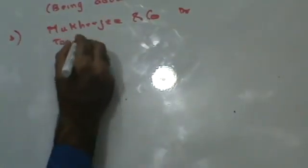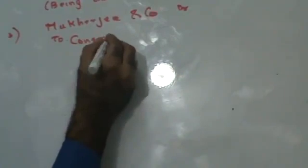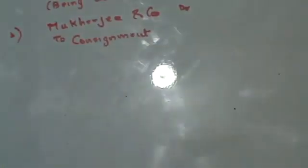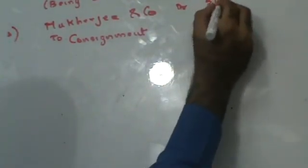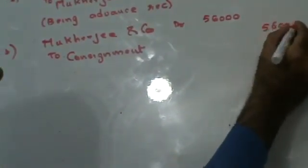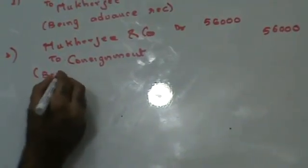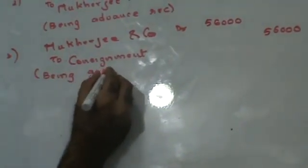Mukherjee and Company sent an account sales which states that the total goods were sold for 56,000. Goods are going out, Mukherjee is the receiver — so Mukherjee and Company account debit to consignment. These goods are sold on consignment for 56,000.